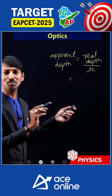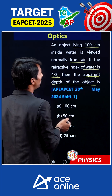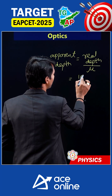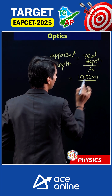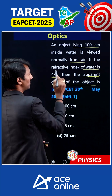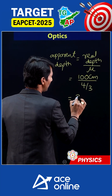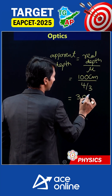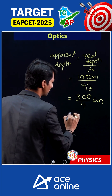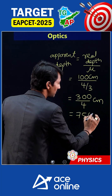The formula gives a result less than the real depth. Real depth is 100 cm, divided by the refractive index which is 4 by 3. So that gives 100 multiplied by 3 over 4, which equals 300 by 4, therefore the answer is 75 cm.